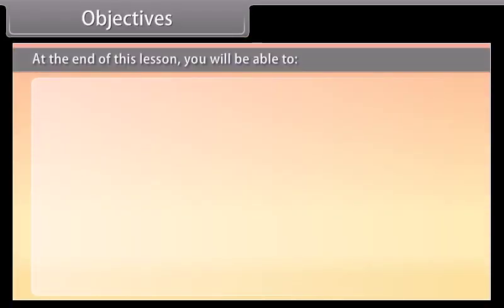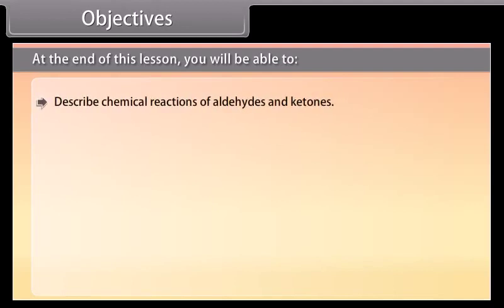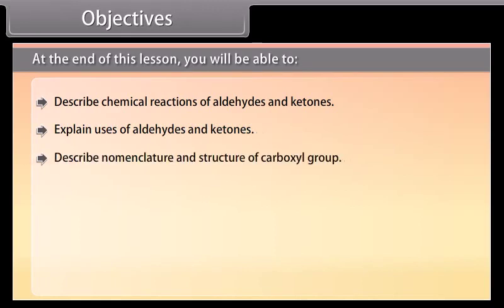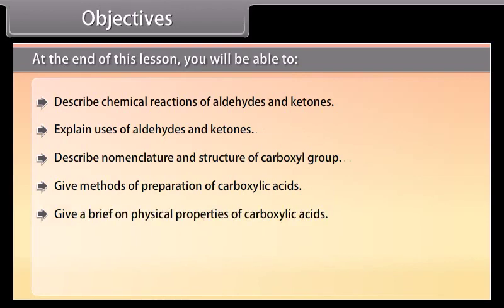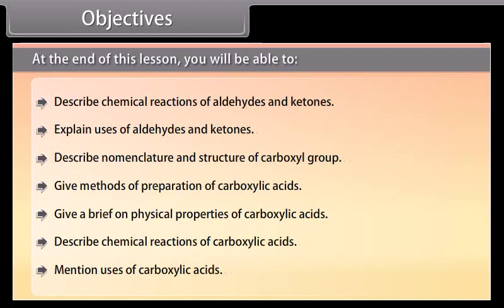Objectives. At the end of this lesson, you will be able to: describe chemical reactions of aldehydes and ketones; explain uses of aldehydes and ketones; describe nomenclature and structure of carboxyl group; give methods of preparation of carboxylic acids; give a brief on physical properties of carboxylic acids; describe chemical reactions of carboxylic acids; and mention uses of carboxylic acids.